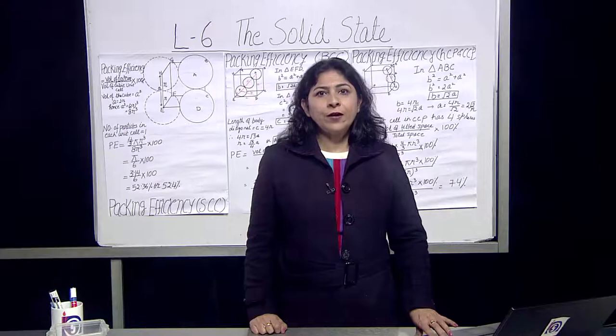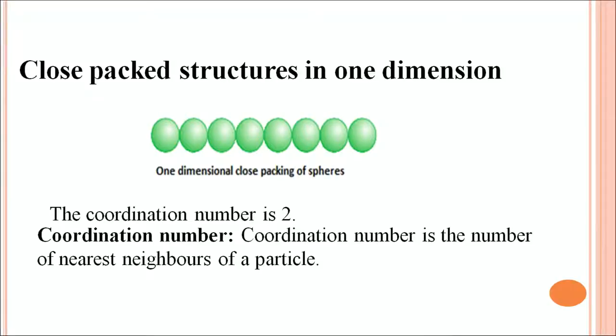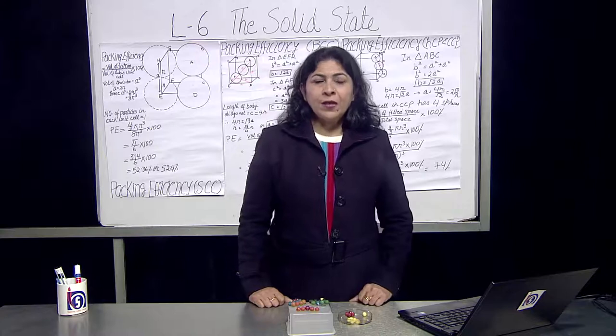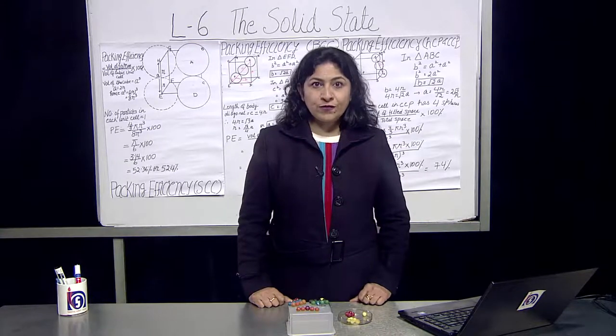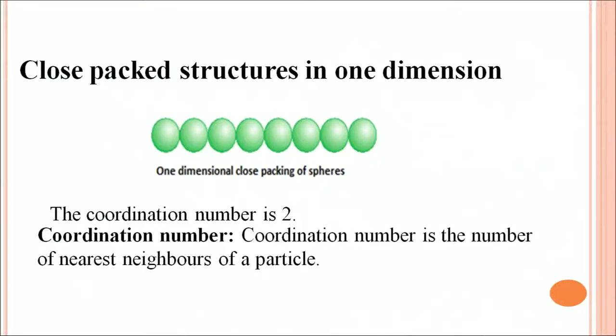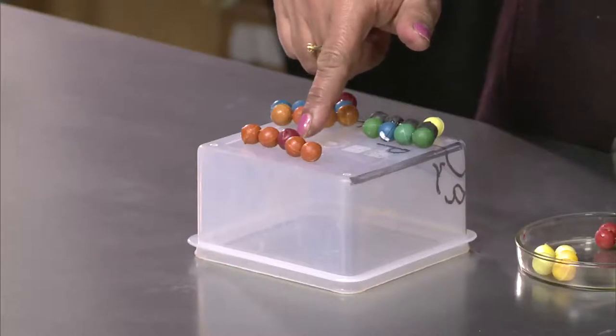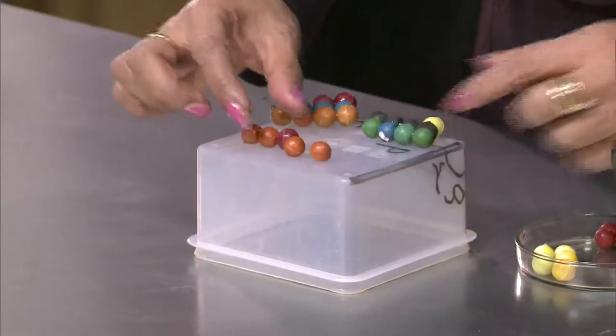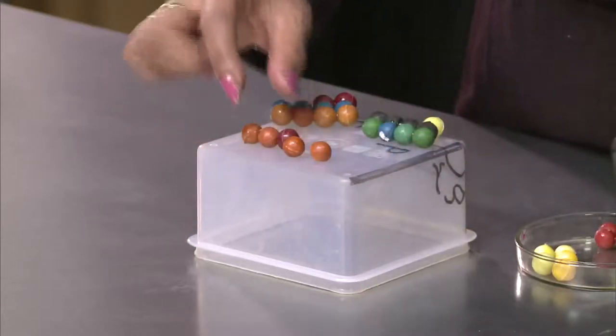Closed packed structure in one dimension. As you know, the atoms are very closely packed and we are assuming atom as a sphere. You can see over there, this is a three dimension. In one dimension, how the atoms are closely packed, you can see over here, this is one dimension and as we assume atom is closely packed.